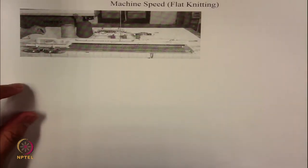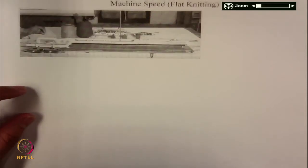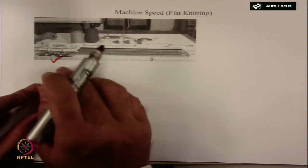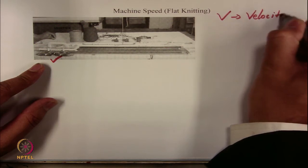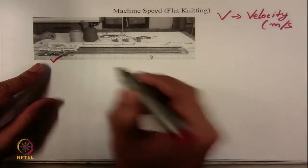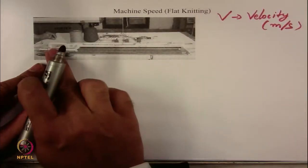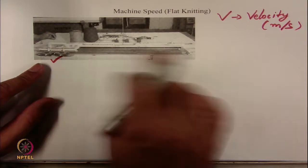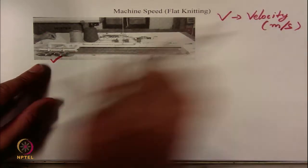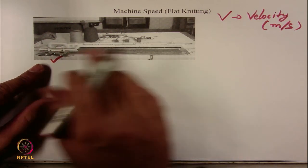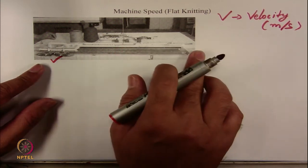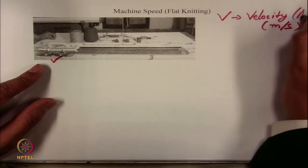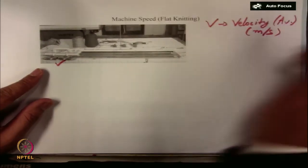Here is the flat machine and this is the carrier. The first variable is the velocity or speed of the carrier in meter per second — this is the velocity through which the carrier moves on the bed. We take the average speed because the velocity starts from 0, reaches its highest point somewhere in the middle of the bed, and then goes back down to 0. That is why we take the average speed.